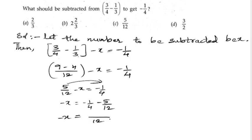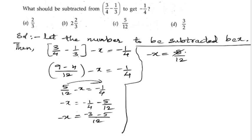We will get -1/12 minus 5/12, so -x equals -8/12, which simplifies to -2/3.